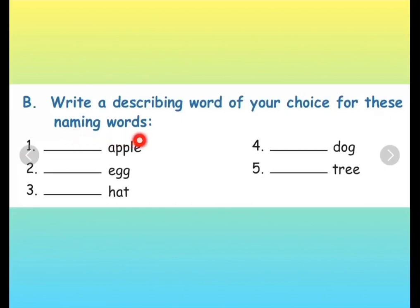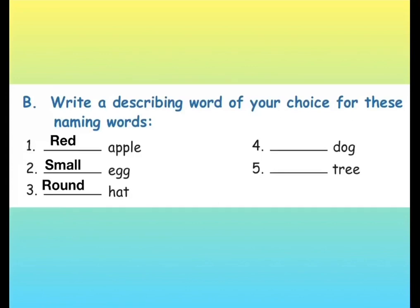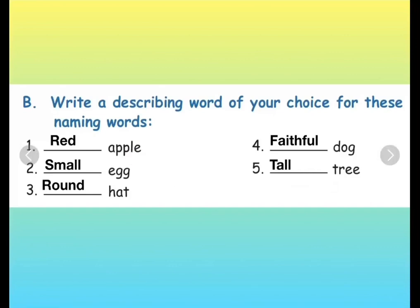Let us now do the next exercise: Write a describing word of your choice for these naming words. Red apple. Small egg. A round hat. A faithful dog. A tall tree. So we have added some describing words to the nouns given in this exercise. The nouns here are: apple, egg, hat, dog, tree.